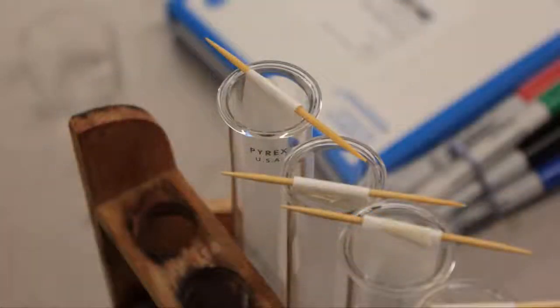Prepare your filter paper strips, leaving about an inch of clearance just above the bottom of the test tube. You'll want to tape the toothpicks to the top of the filter paper strips so they can rest on the very top of the test tubes, letting the strip hang inside.